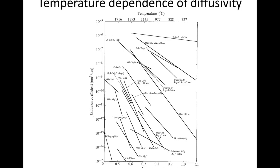We're going to look at the temperature dependence of diffusivity. This slide shows the diffusion coefficient, or diffusivity, on the y-axis, and on the x-axis we have a function of temperature — specifically one over temperature. That means temperature is increasing from right to left. This is showing the diffusivity or diffusion coefficient for a number of ceramics.